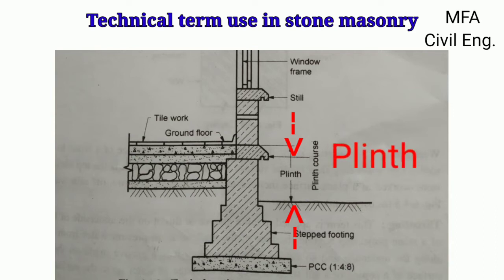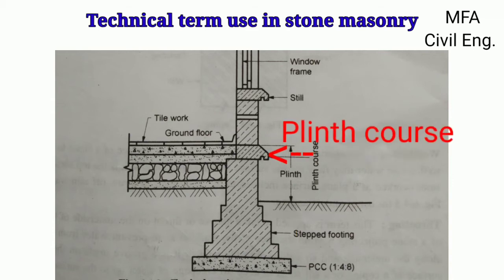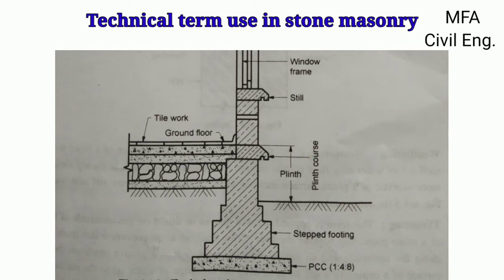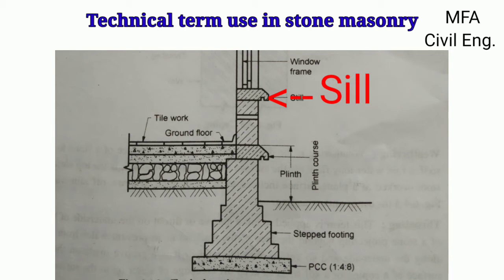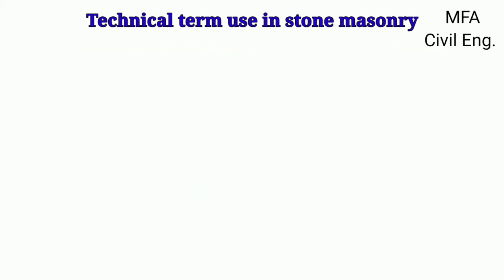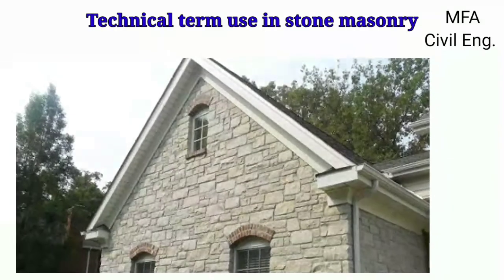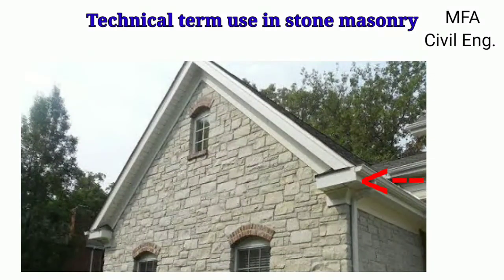The projecting course at ground floor level is known as the plinth. The plinth course protects the interior of a building from rainwater and frost. The topmost layer or course of a plinth masonry is called the plinth course. The bottom surface of a door or window opening is known as the sill, and the sill stones are dressed so that they prevent the entry of water to the interior of the building.